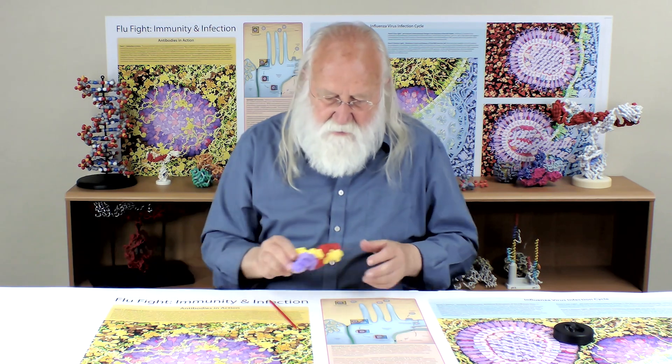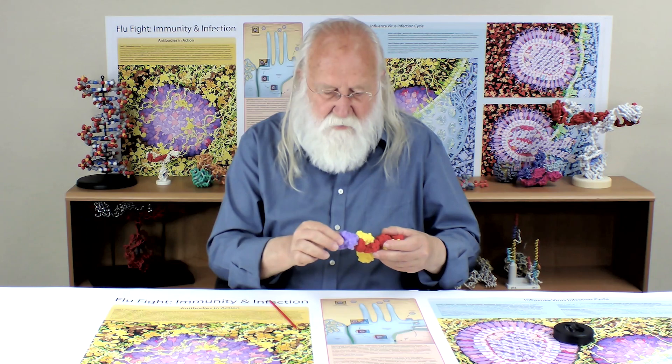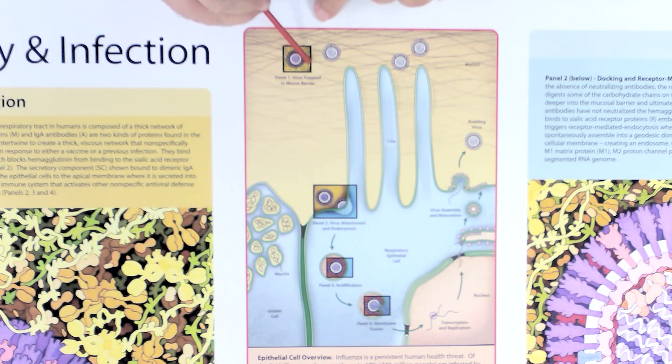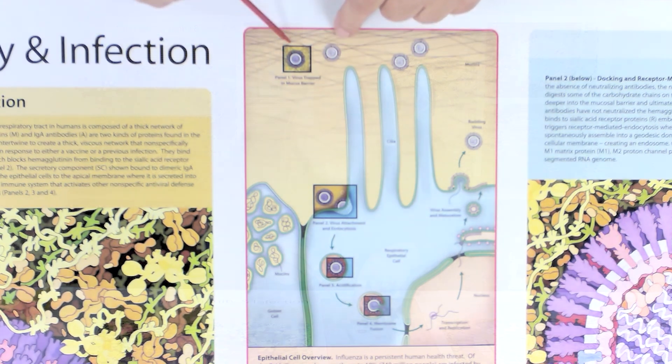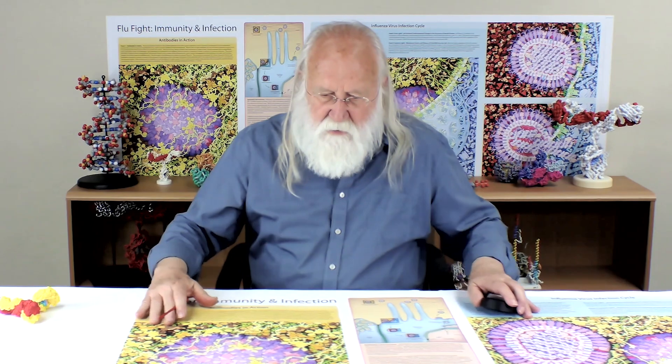But we want to talk about antibodies now, and how the vaccine has produced antibodies which are going to seek out an epitope on the coronavirus and inactivate the virus. Right here we have a virus trapped in the mucosal layer, and David Goodsell has illustrated that in this large panel.